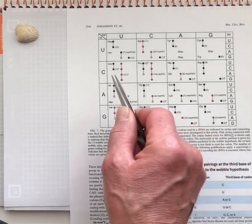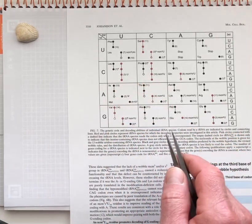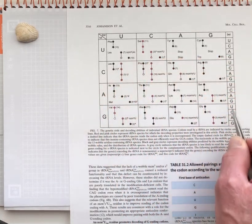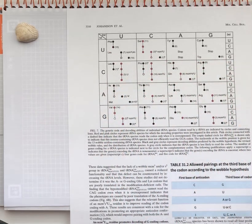First of all, I just want to emphasize that this table has all the information that a regular genetic code table has. These headings, the row headings and the column headings, indicate the codon positions on the messenger RNA.